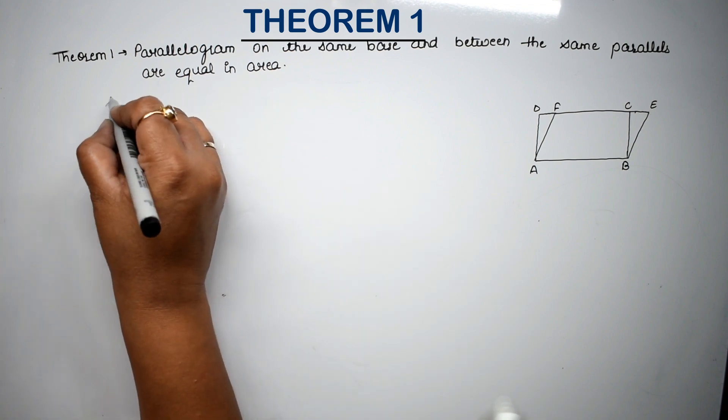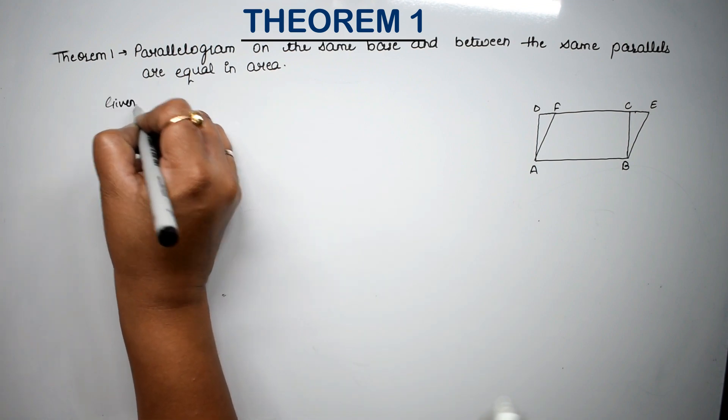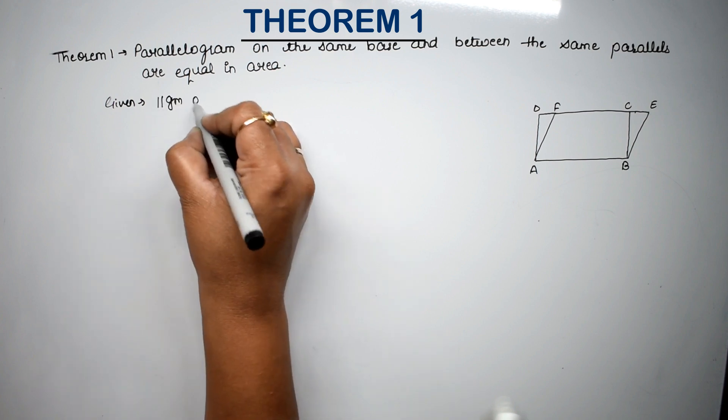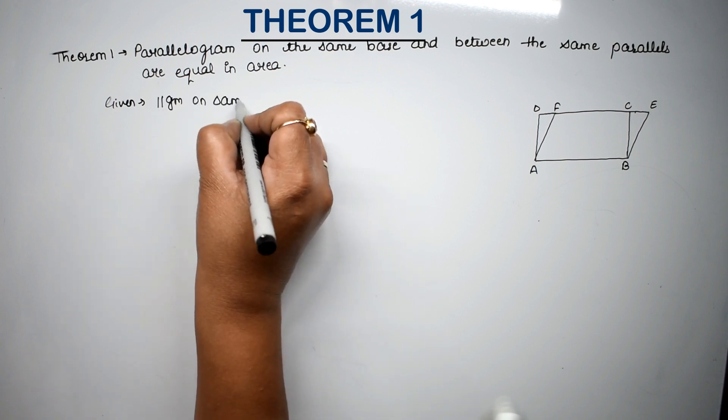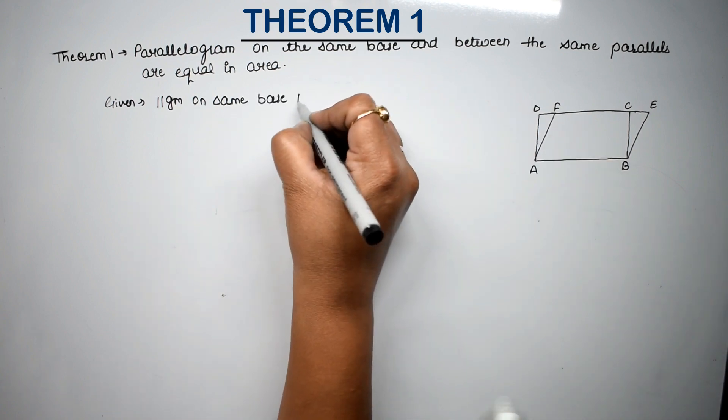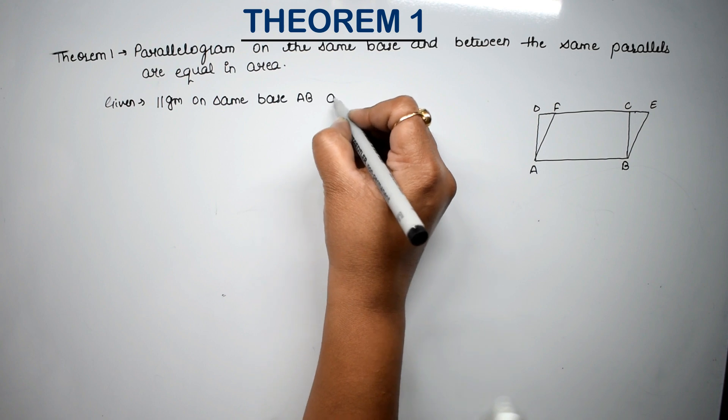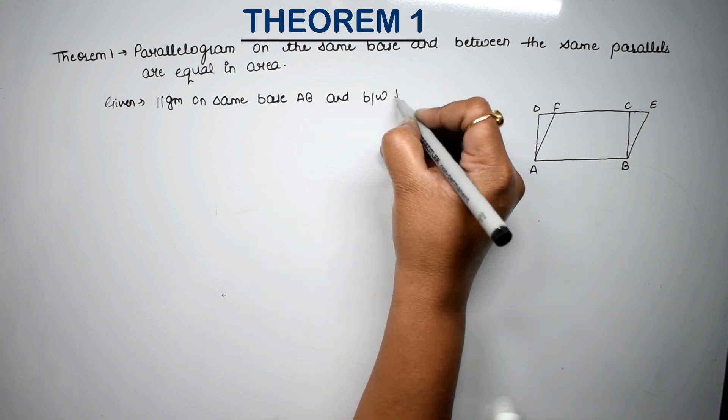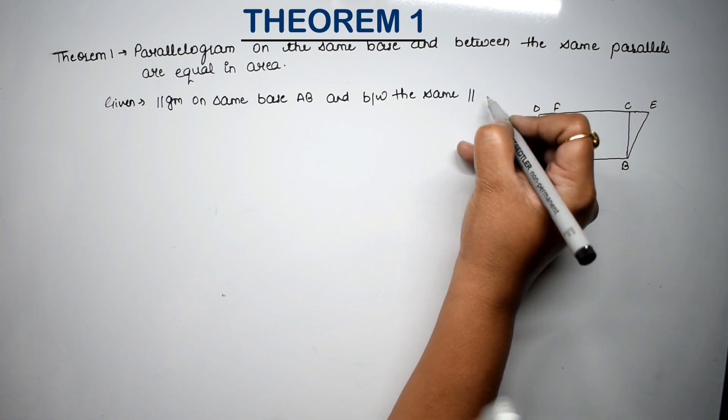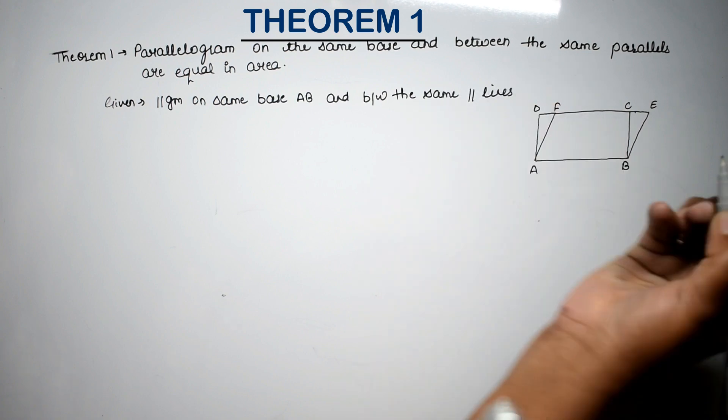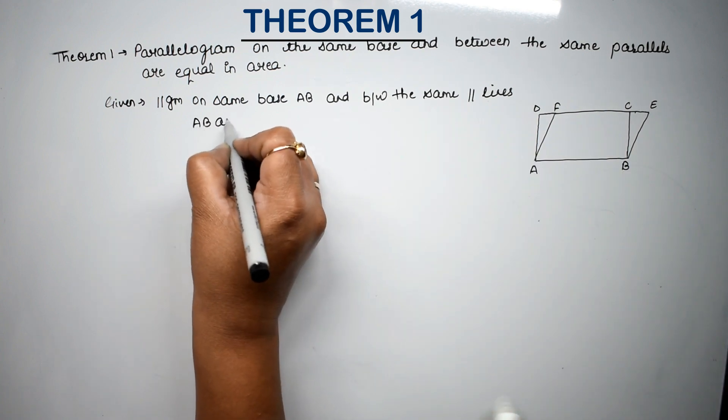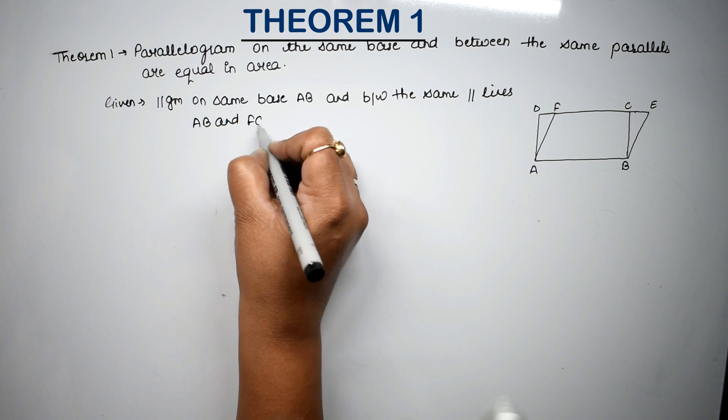So what has given us? Parallelograms on the same base and between the same parallel lines. Which parallel lines? AB and FC. AB and FC. Right friends?